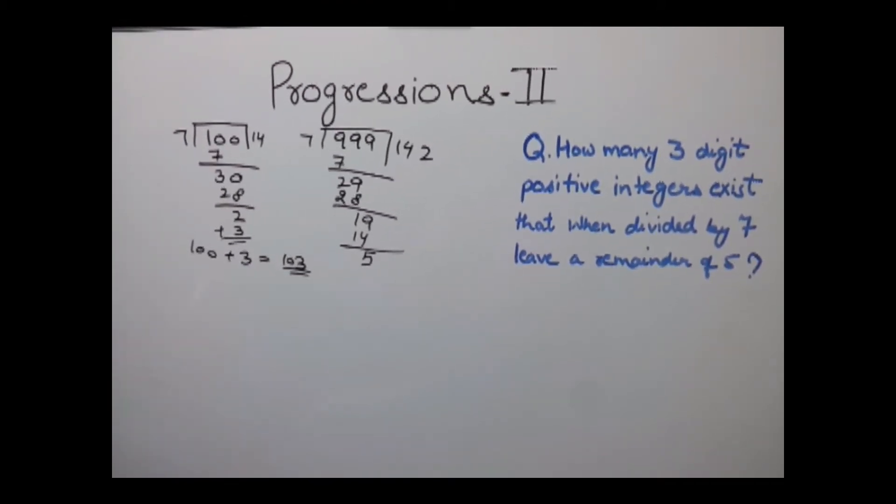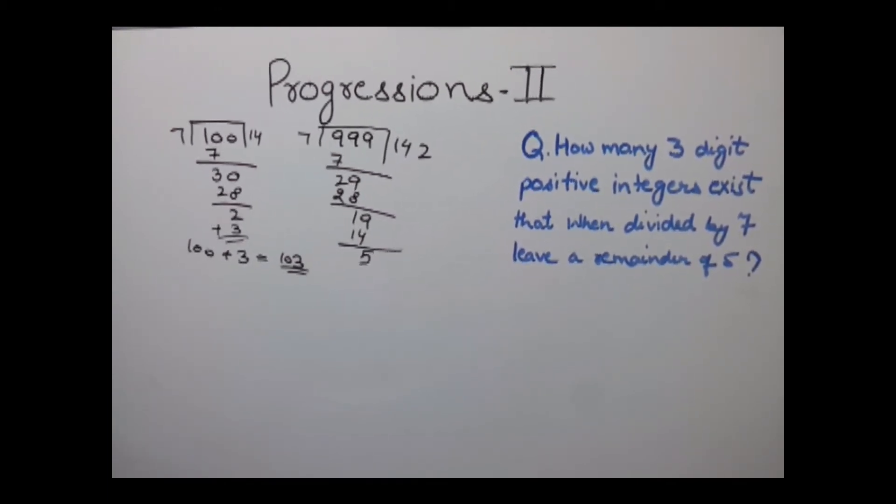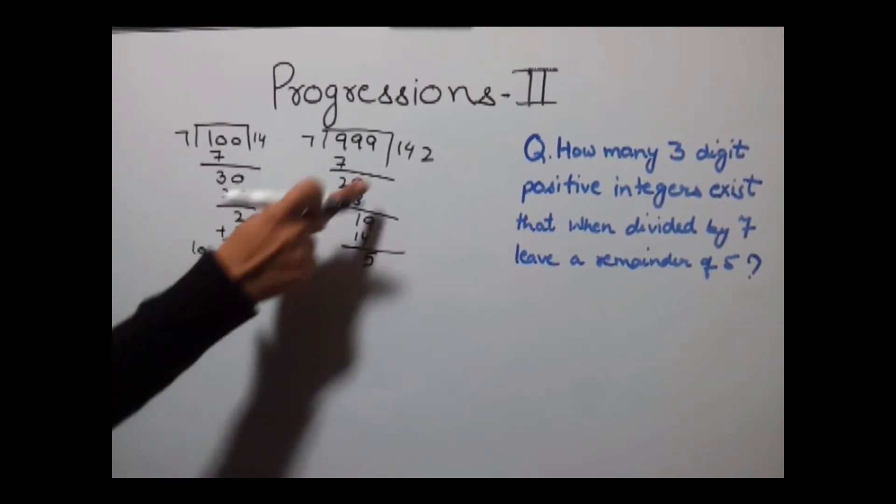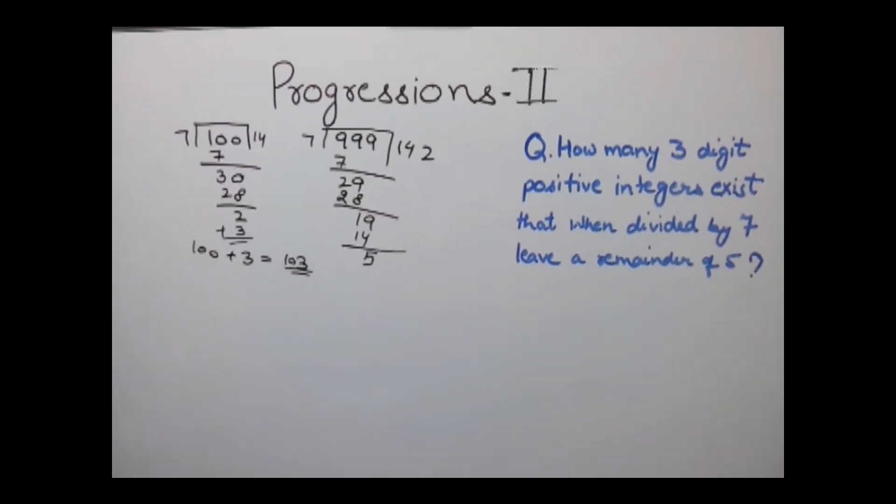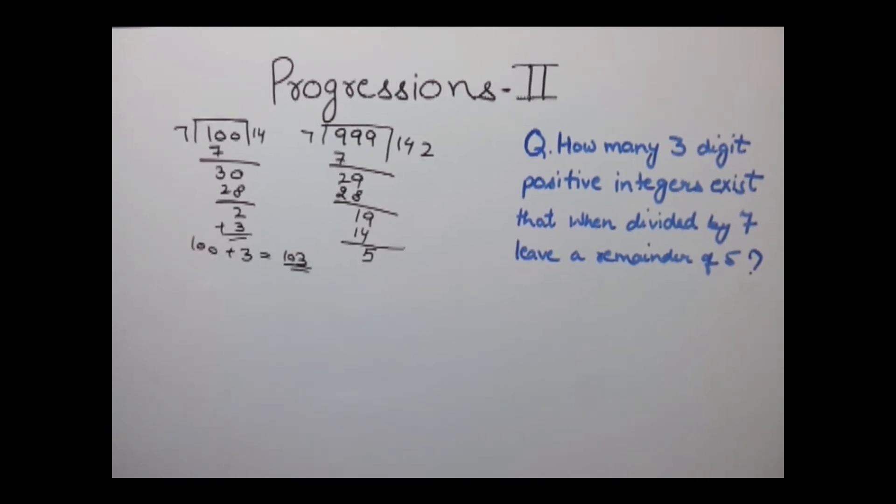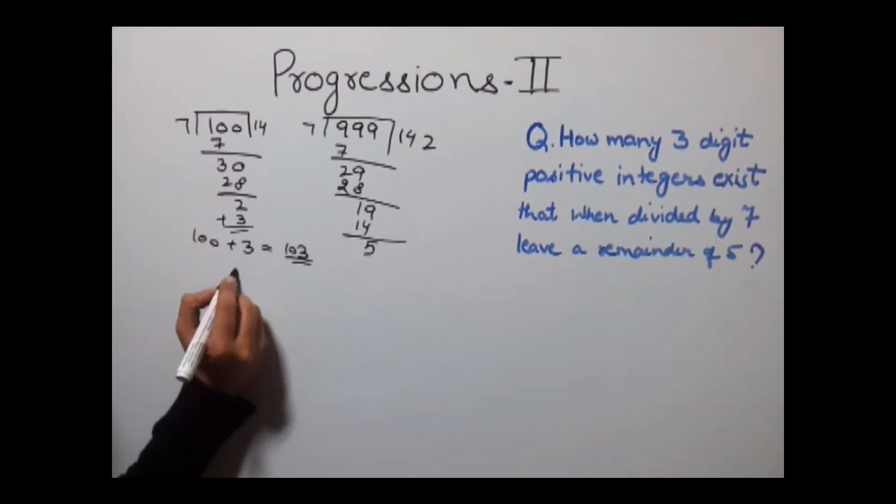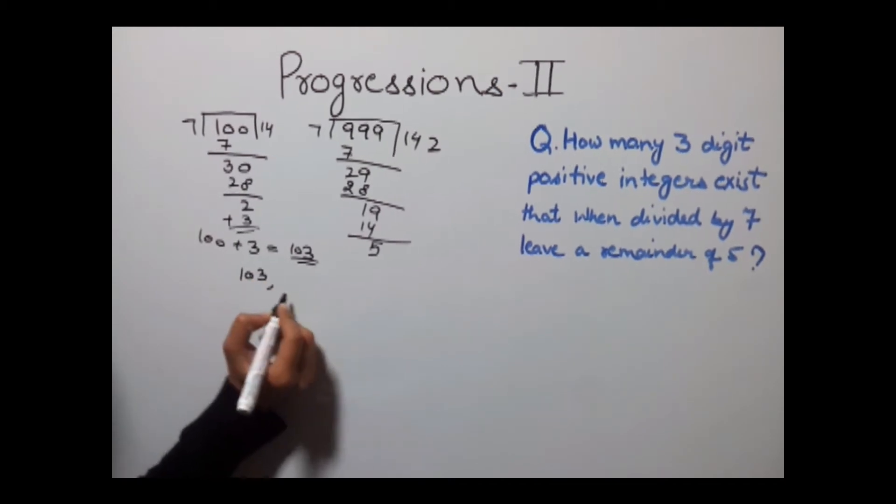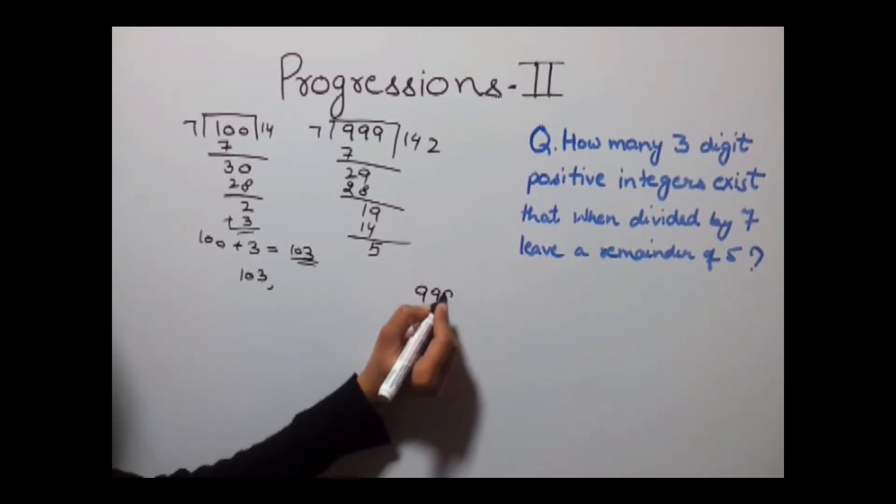Thus 103 is our first three-digit number that gives a remainder of 5 when divided by 7. Similarly, 999 is the last three-digit number which when divided by 7 gives a remainder of 5. So our series becomes 103 and 999.